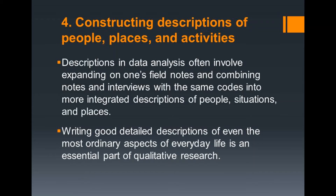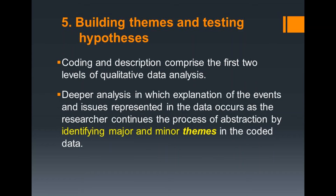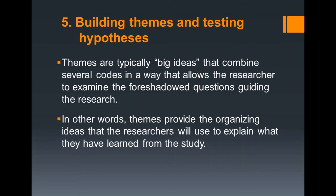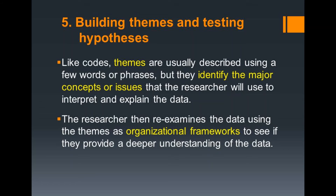Writing good, detailed descriptions of even the most ordinary aspects of everyday life is an essential part of qualitative research. As we should know, coding and description comprise the first two levels of qualitative data analysis. Deeper analysis — in which explanation of the events and issues represented in the data occurs — takes place as the researcher continues the process of abstraction by identifying major and minor themes in the coded data. These themes are typically big ideas that combine several codes in a way that allows the researcher to examine the foreshadowed questions guiding the research. In other words, themes provide the organizing ideas that the researchers will use to explain what they have learned from the study. Like codes, themes are usually described using a few words or phrases, but they identify the major concepts or issues that the researcher will use to interpret and explain the data.